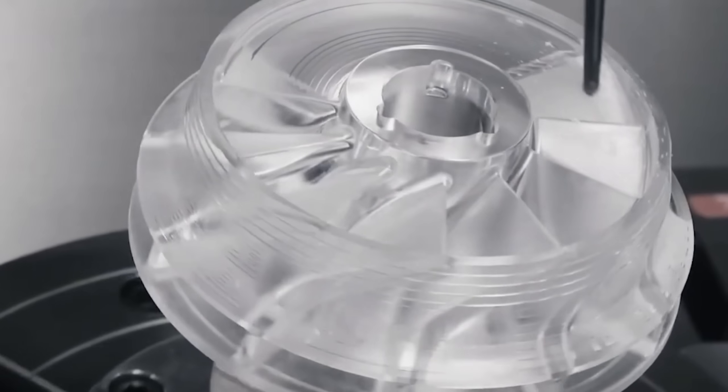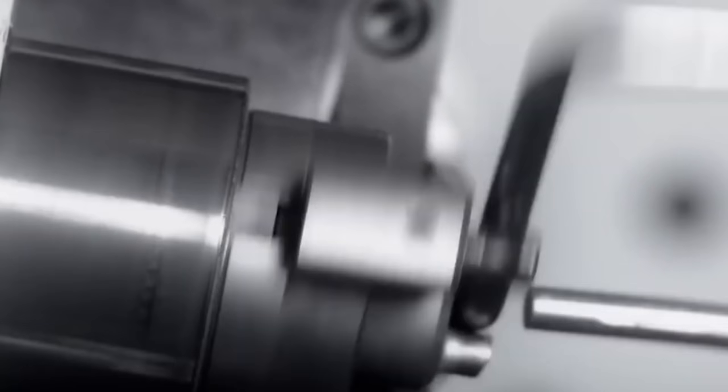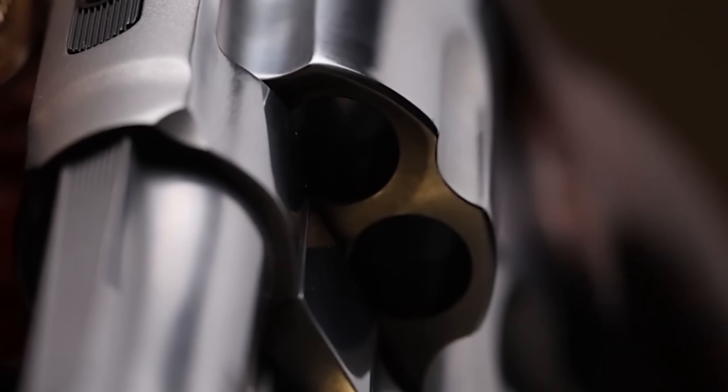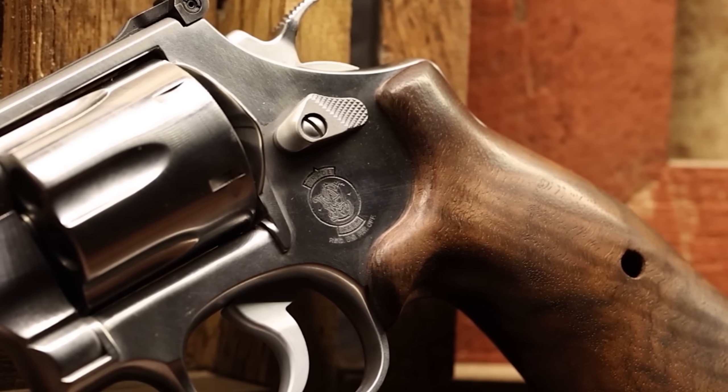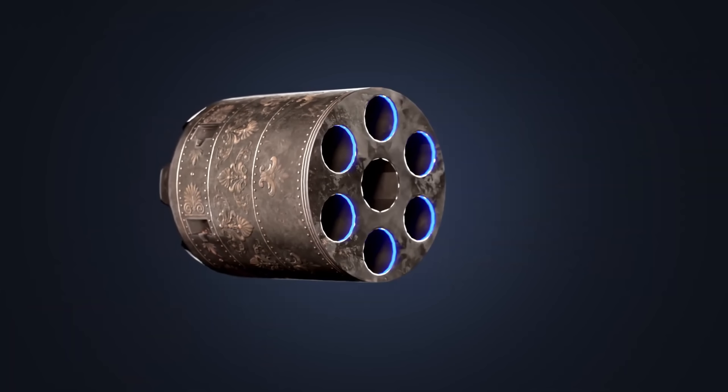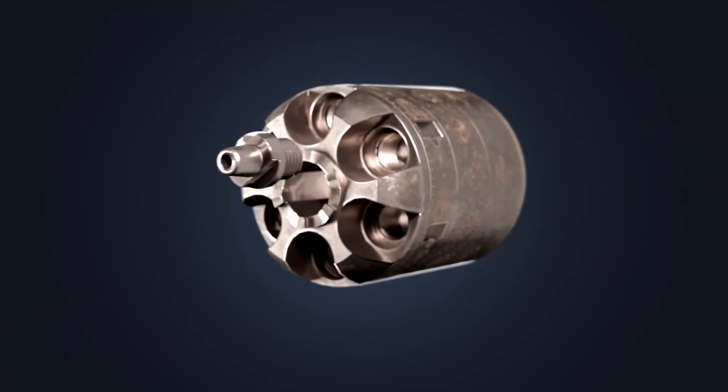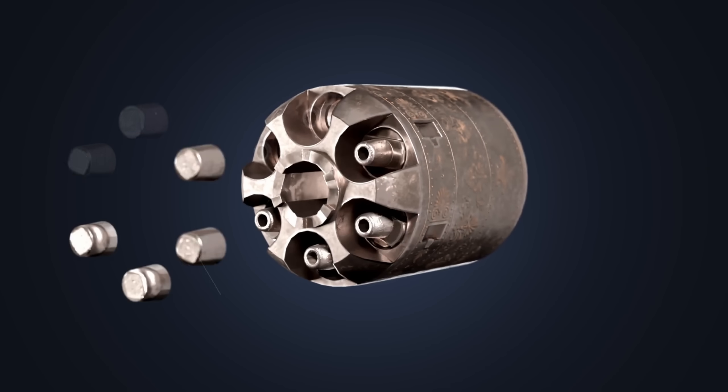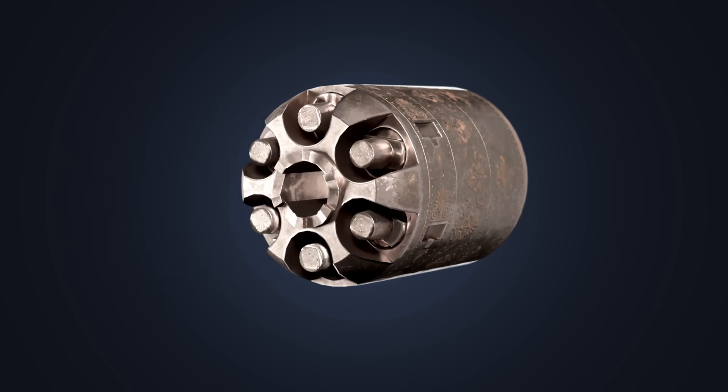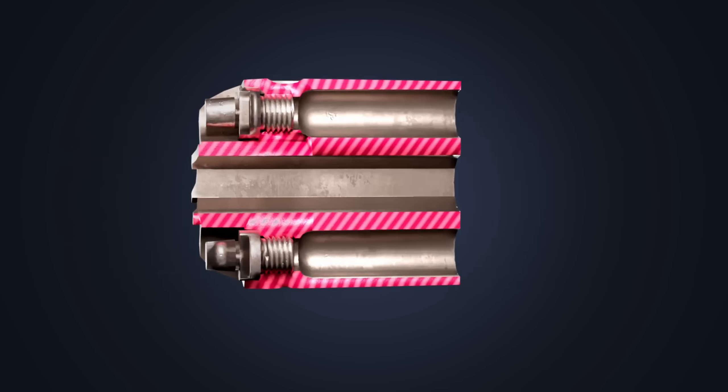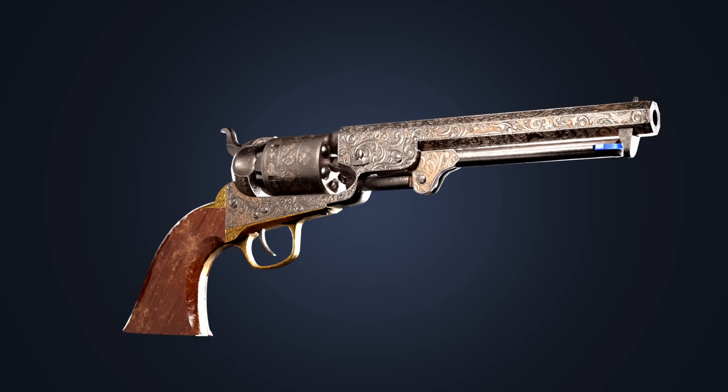Technicians use micrometers and laser gauges to verify chamber diameter and concentricity. They check that each chamber is uniform and that the spacing between chambers is exact. Even a tiny deviation can affect how smoothly the cylinder rotates or how accurately the revolver fires. This careful measurement process ensures that only cylinders meeting strict specifications go on to the next stage.